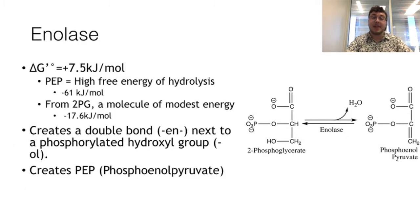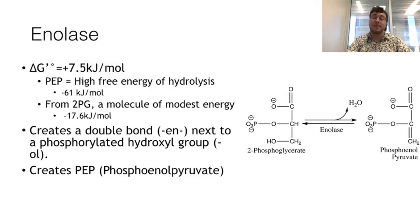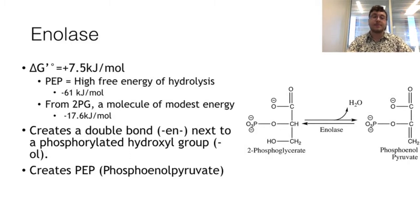The ninth step is catalyzed by enolase. This reaction is modestly unfavorable, creating a molecule with a high free energy of hydrolysis from a molecule of modest energy. Enolase creates an enol — a double bond next to an alcohol — hence the name enolase. Phosphoenolpyruvate (PEP) is used in several other reactions and pathways, such as the coupled import of glucose.